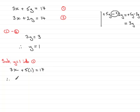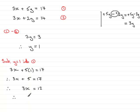Simplifying this, we have 3x plus 5 ones are 5, equals 17. All I need to do now is subtract 5 from both sides — that's going to leave me with 3x on the left, and 17 take away 5 is 12. Dividing both sides by 3 leaves me with x equals 4. So we have y equals 1 and x equals 4.